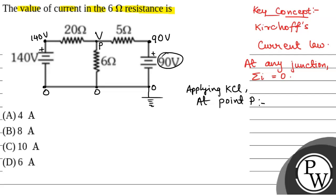So, this is the current flowing, that is, V minus 0 by 6, because current I is equal to delta V by R. Delta V is the potential difference and R is the resistance.